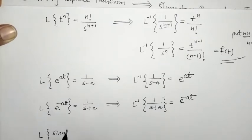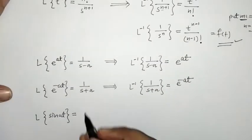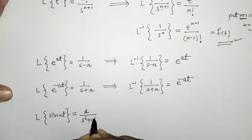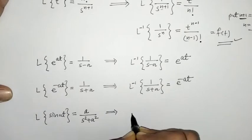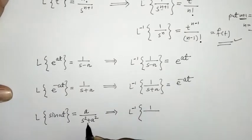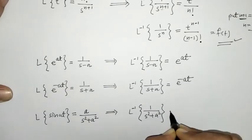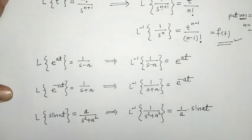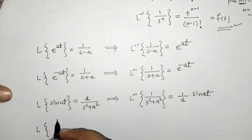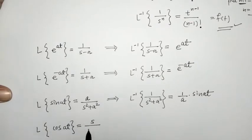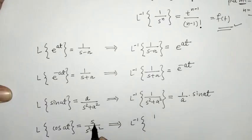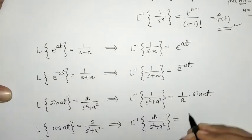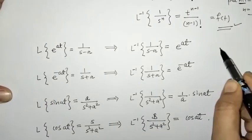L{sin(at)} = a/(s²+a²), where a is a constant. From this, L⁻¹{1/(s²+a²)} = (1/a)·sin(at). Similarly, L{cos(at)} = s/(s²+a²), so L⁻¹{s/(s²+a²)} = cos(at).